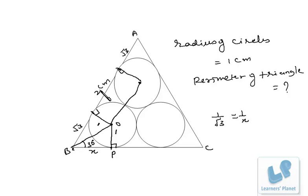So this total length is 2 plus 2 root 3. The perimeter of this triangle will be this into 3, or we can say 6 plus 6 root 3.